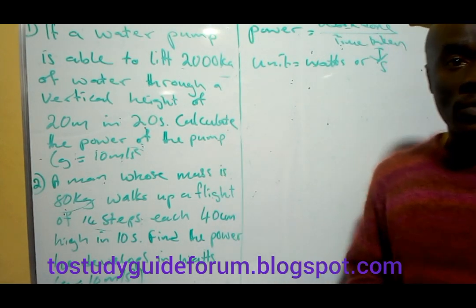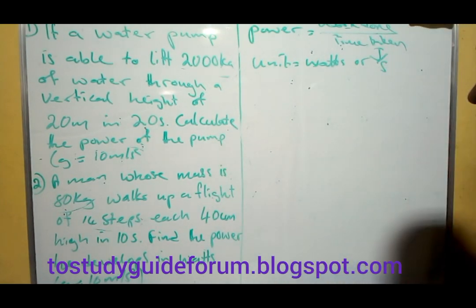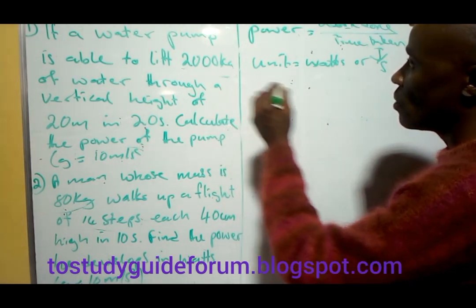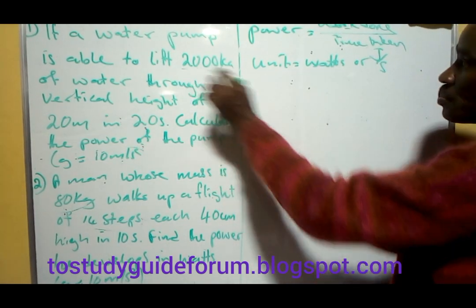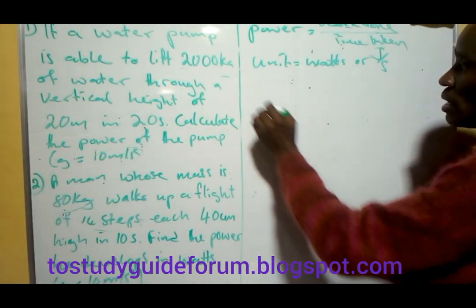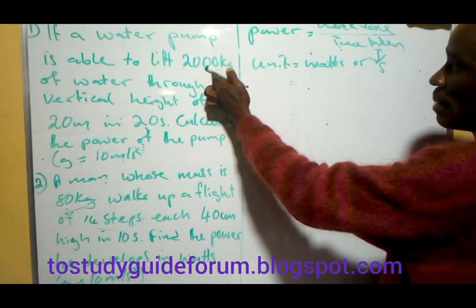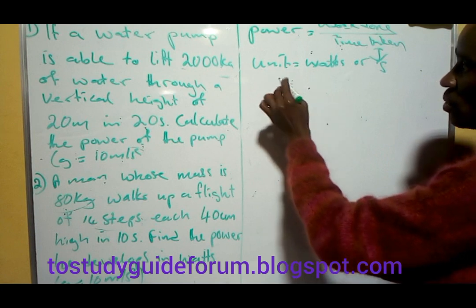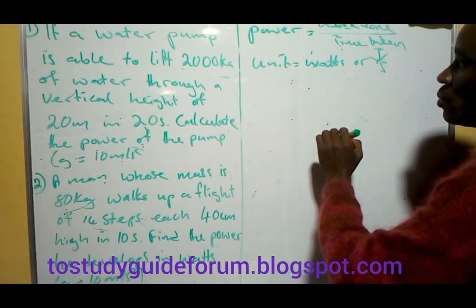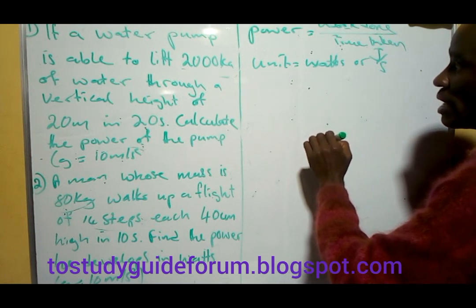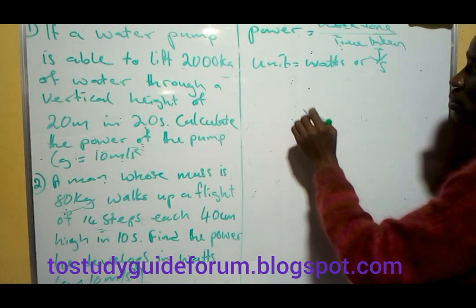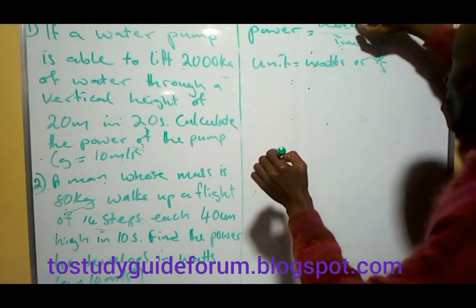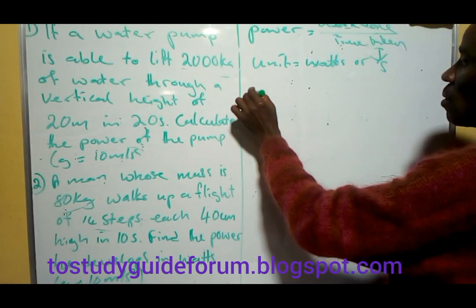For the first question, the mass of the water lifted is 22,000 kg. The first thing we do is calculate the work done.